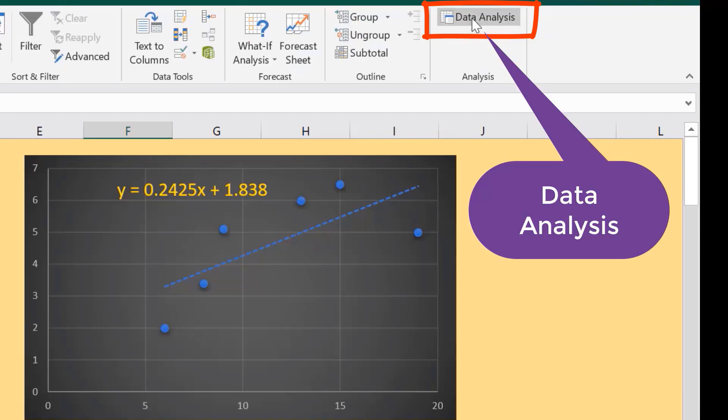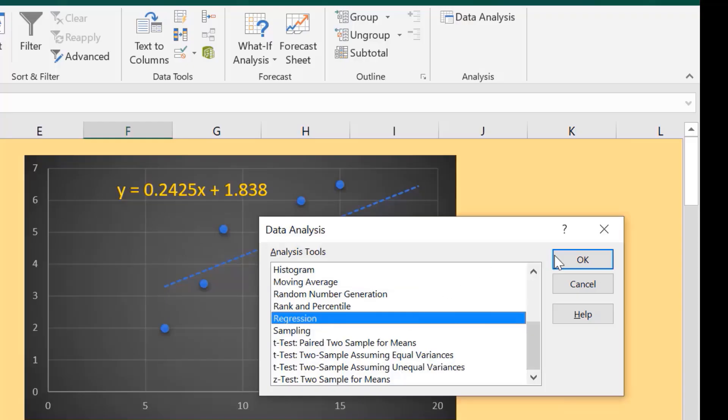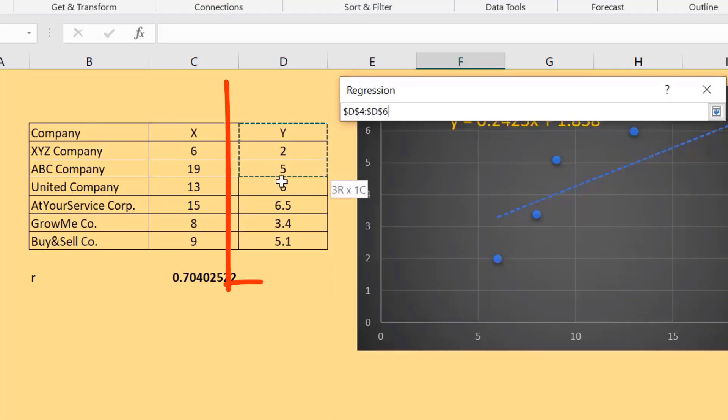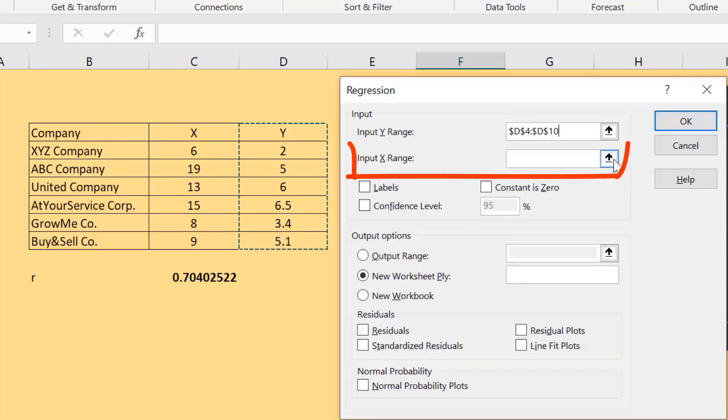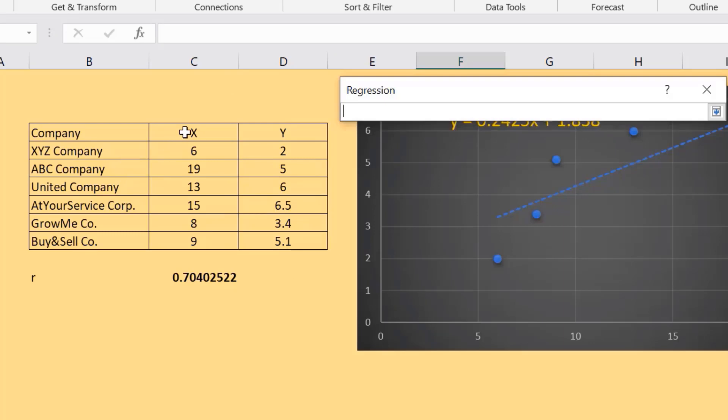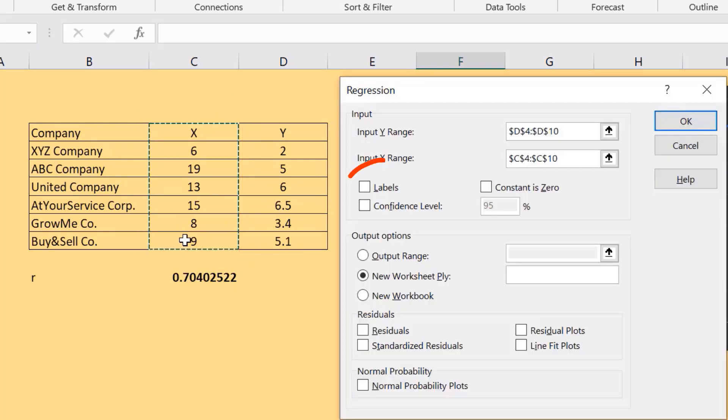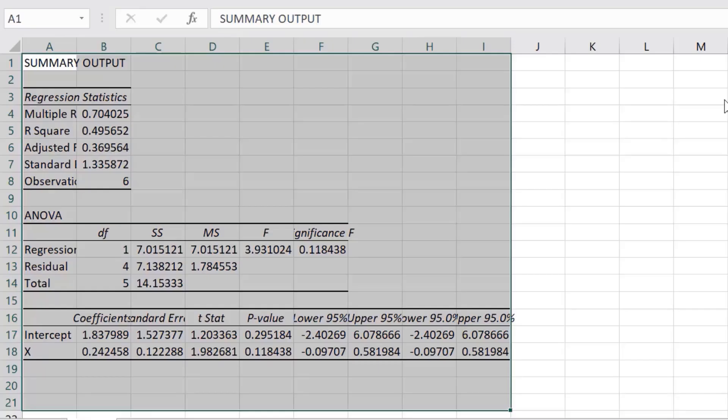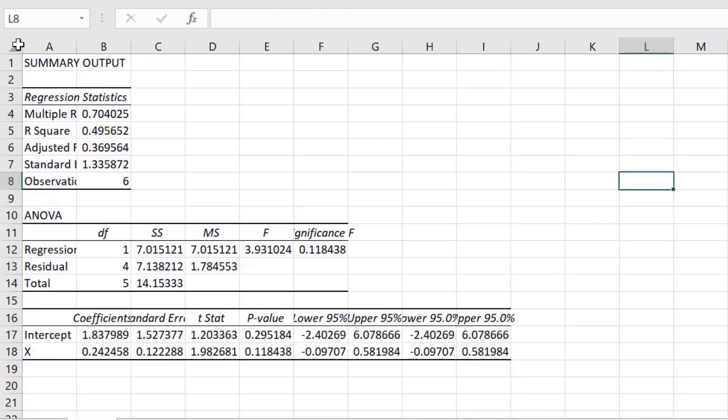When you go to Data tab, Data Analysis will appear. Click it. Choose Regression. Under Y input, select the values of Y including its label. Click the label box. Under output box, choose new workbook. Finally, click OK.